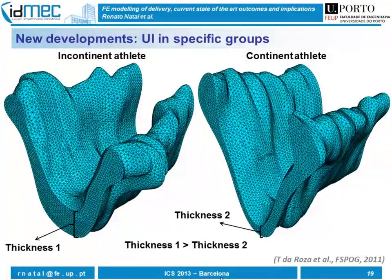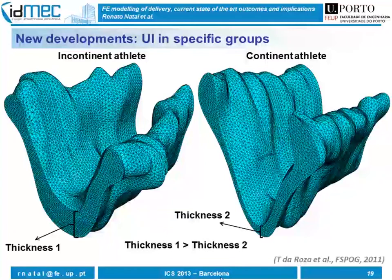Another important aspect is to study specific groups. In this example I'm showing results for athletes. On the left we have a solid model of the pelvic floor for an incontinent athlete, and on the right for a continent athlete. We can see that the thickness of the incontinent athlete is greater than the other, yet this athlete is incontinent.